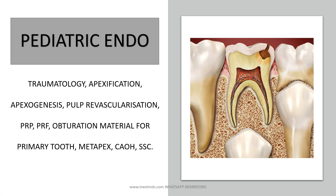Next topic is pediatric endo, which will also cover a little more traumatology. You should know about apexification and apexogenesis and the difference between them, what pulp revascularization is, and what agents are used — the latest methods include PRP (platelet-rich plasma) and PRF (platelet-rich fibrin). Two or three lines of knowledge about PRP, PRF, and pulp revascularization is enough. Also, what obturation material is used for primary teeth, how it differs from permanent tooth obturation, and what metapex, calcium hydroxide, and stainless steel crown are.